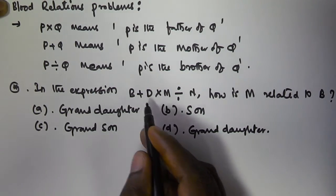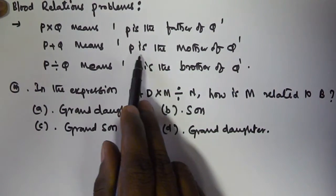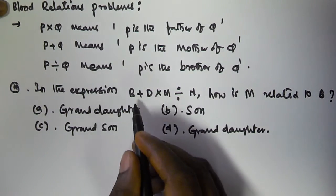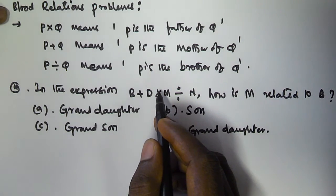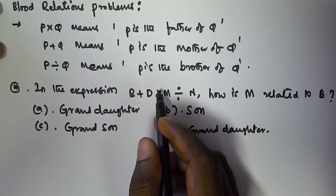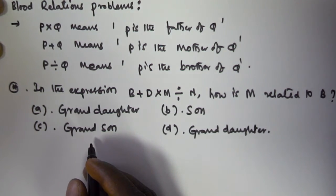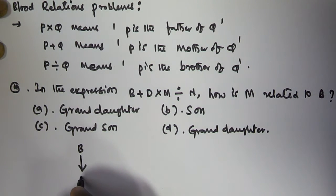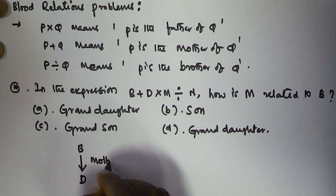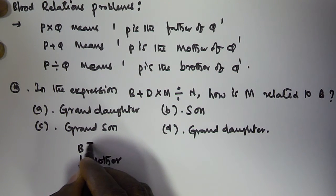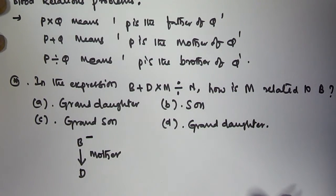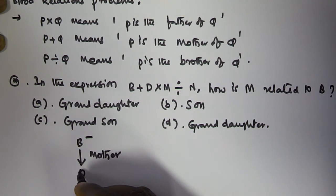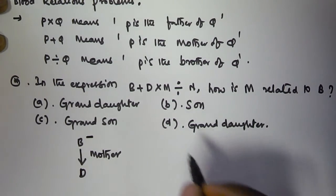First, we take B + D. P + Q means P is the mother of Q, so in the same manner B + D means B is the mother of D. The relationship here is mother, and since she is female, I am representing that with a negative sign. We do not know the gender of D yet.